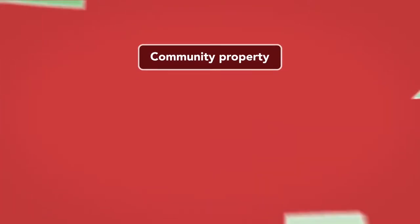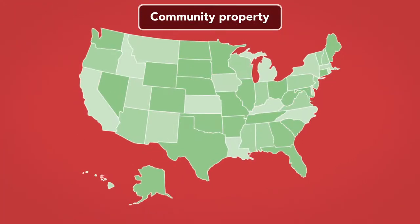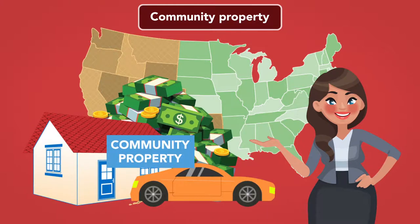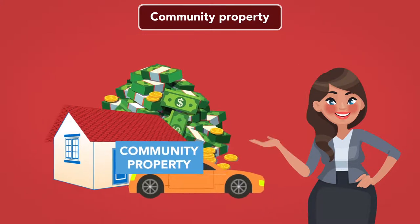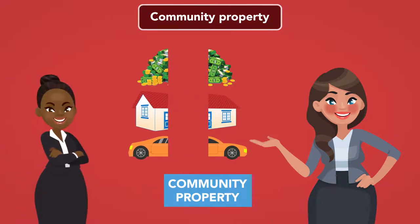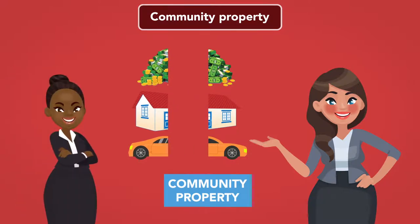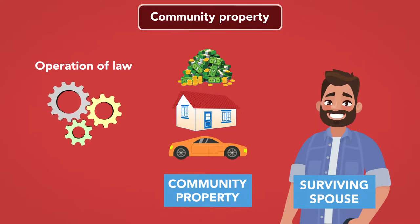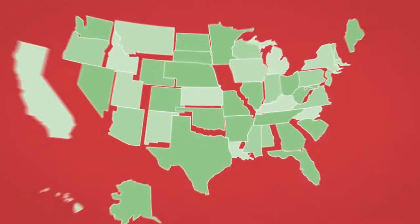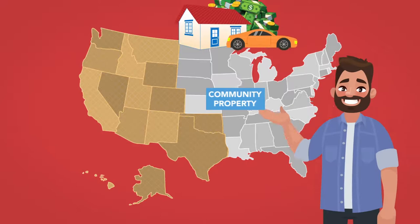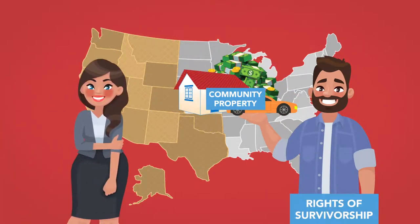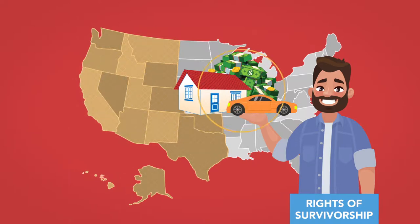Community property. In community property states, which include mainly western and southwestern states, spouses can hold real and personal property as community property. While spouses who hold community property may give their one-half interest in community property to whomever they choose, if a married testator holding community property doesn't name a beneficiary, the property passes to the surviving spouse by operation of law. Some community property states allow spouses to choose to hold property as community property with right of survivorship. In these states, when the first spouse dies, the survivor receives automatic ownership of the property.